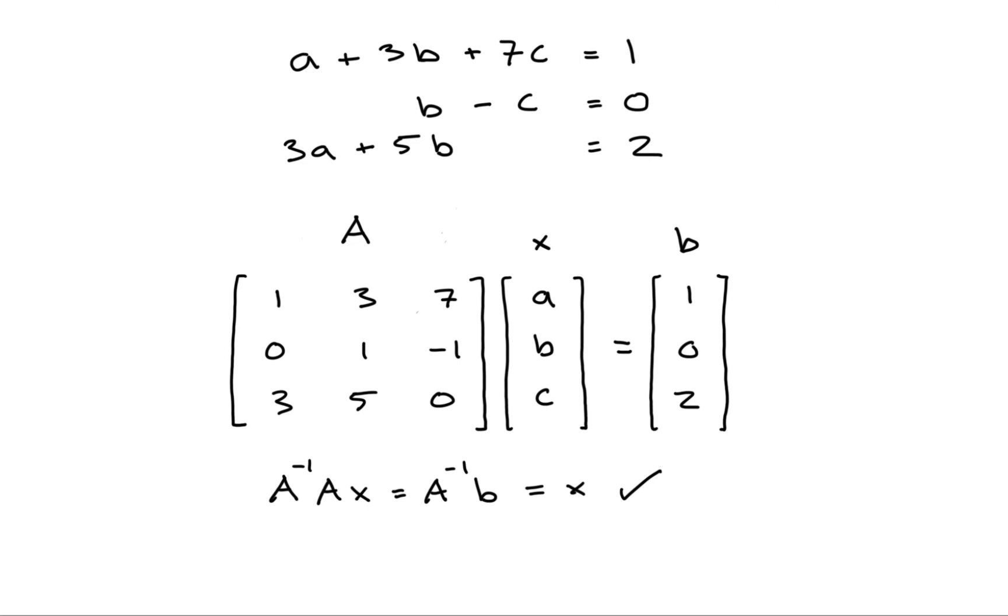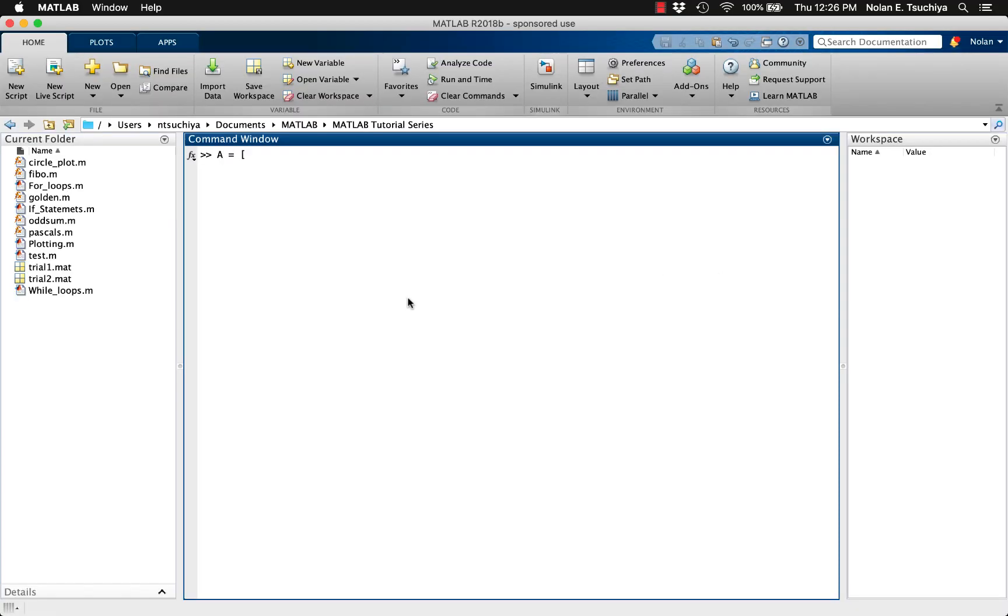However, this only works if the matrix A has an inverse, which not all matrices have. For instance, a square n by n matrix doesn't have an inverse if its rank is less than n, or equivalently, if the determinant is zero.